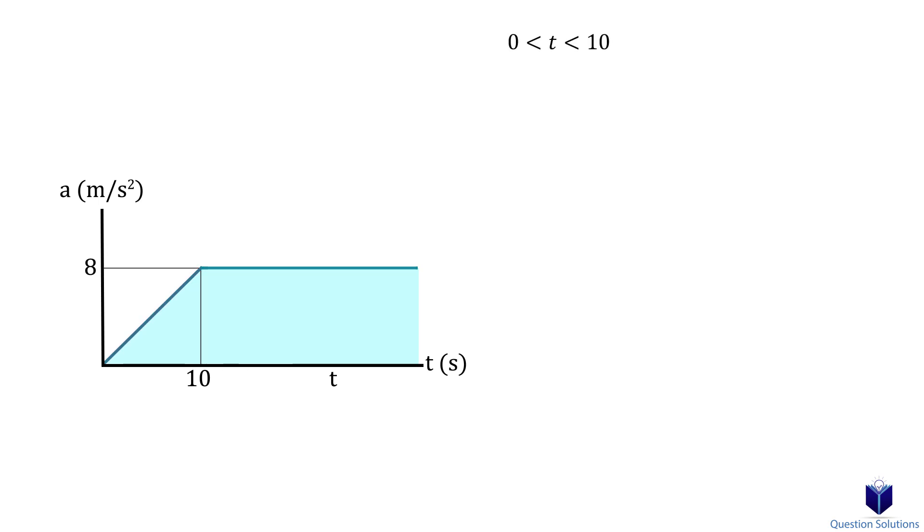First, we have to figure out the equation for the first segment on the acceleration versus time graph. We can do that by using our simple y equals mx plus b equation. Looking at the first segment, we can see that the b value is zero since it goes through the origin.